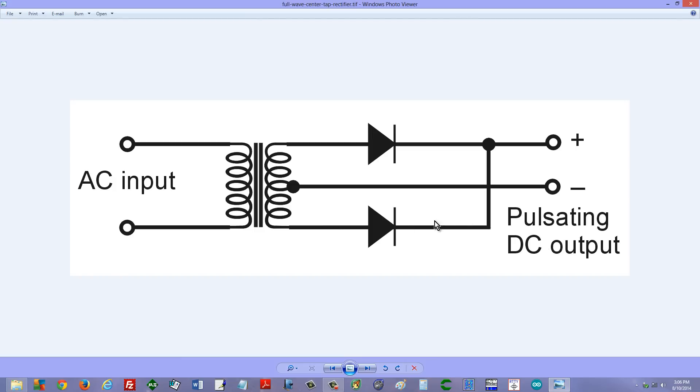That is how full wave rectification is supposed to work. It only needs two diodes and they are pretty cheap. But a center tapped transformer like this, not so cheap usually.